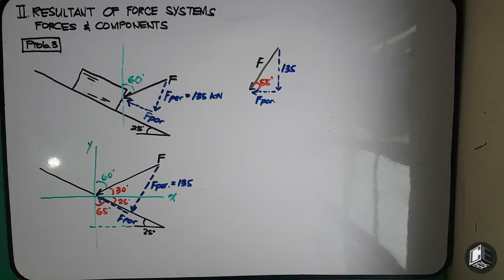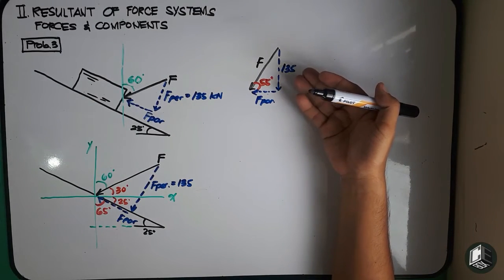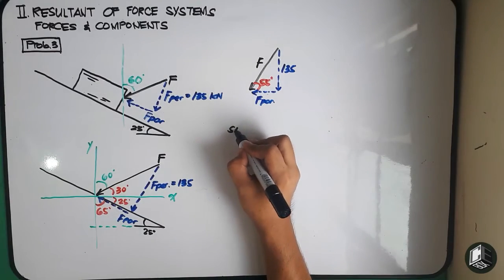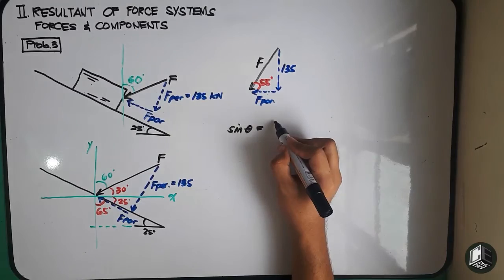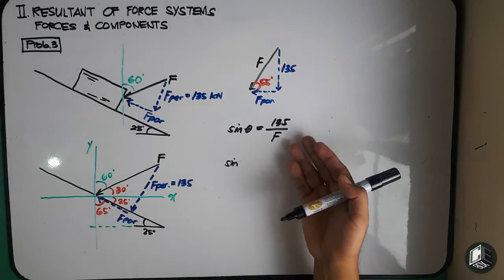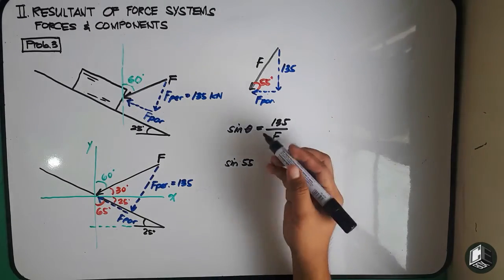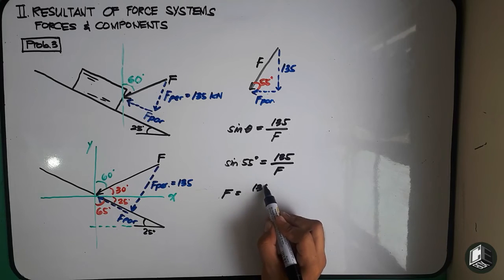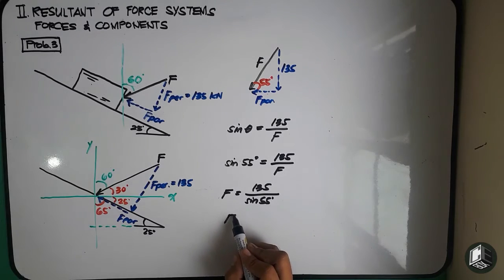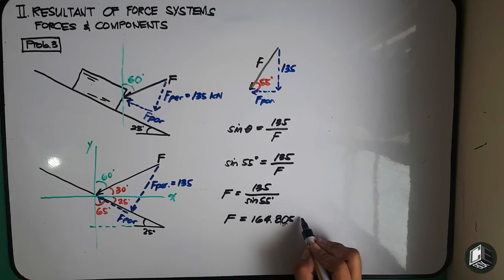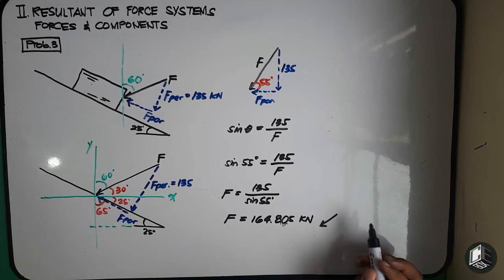To find force F, we identify what values we have: 135 kN is opposite to the 55-degree angle, and F is the hypotenuse. Therefore we use sine. Sine of theta equals opposite over hypotenuse: sine of 55 degrees equals 135 over force F. Therefore, force F equals 135 kN divided by sine of 55 degrees, which equals 164.805 kN. So our force F is directed downward to the left.